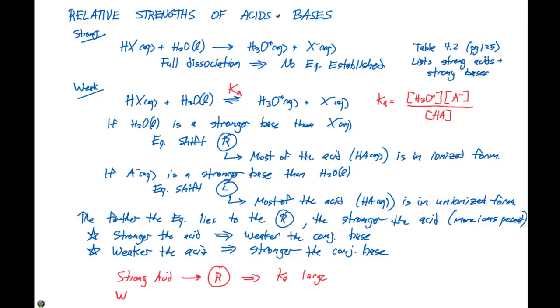If we have a weak acid, that means our equilibrium is gonna lie more to the left. Our Ka is going to be small. And because that Ka is small, the weak acid, we don't have as much concentration of those H3O plus ions in solution. So our acid is going to be weaker.